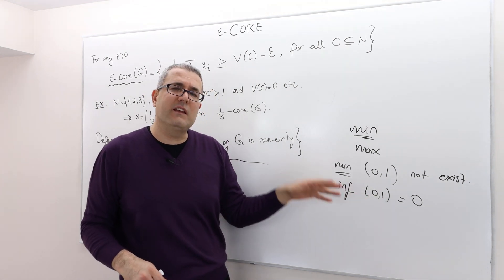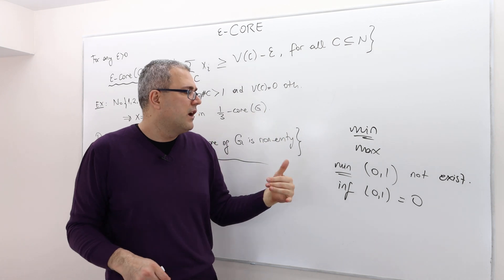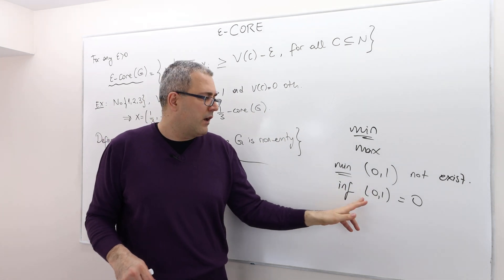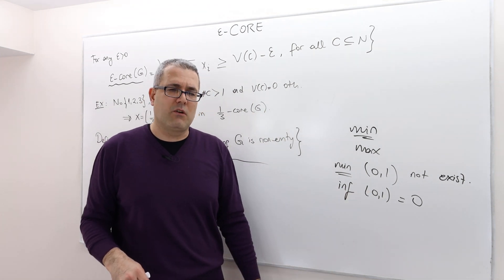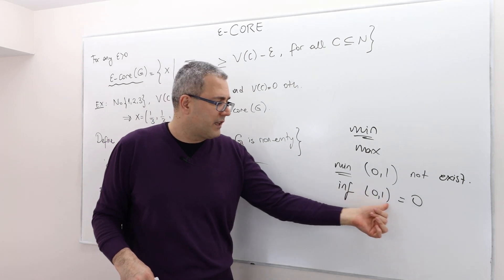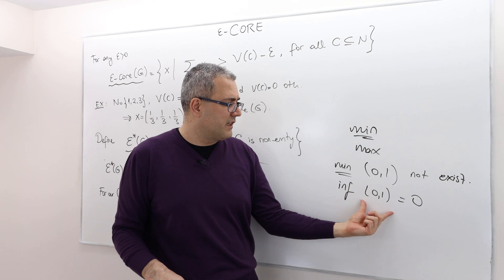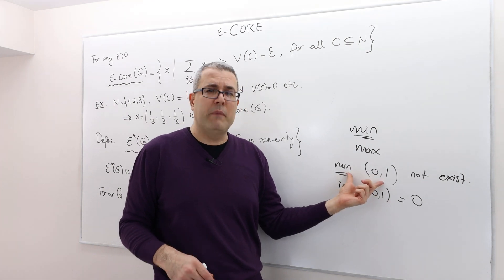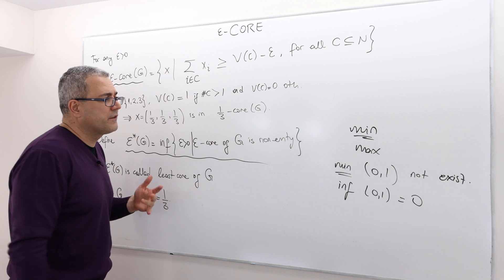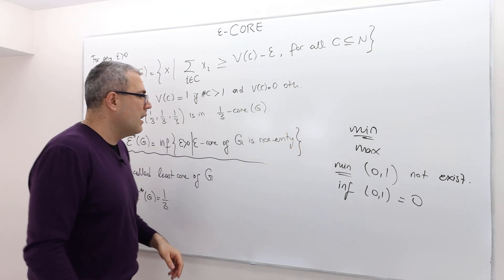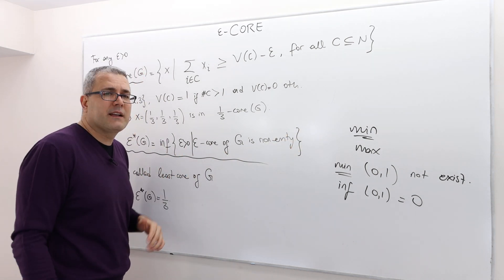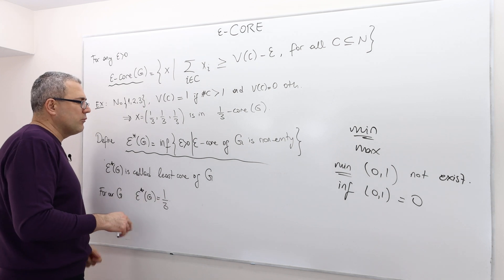The infimum of a set is the highest number that is less than all the numbers in this set, 0, 1. So highest number that is less than 0, 1 is 0 itself. But because it's not in this interval, it's not min, but it's the inf. And supremum versus max is working exactly the same way.